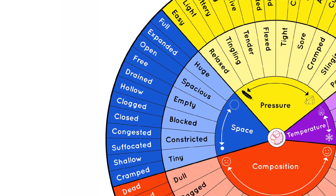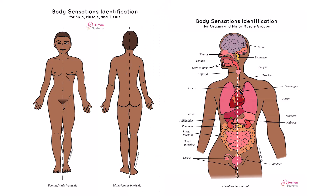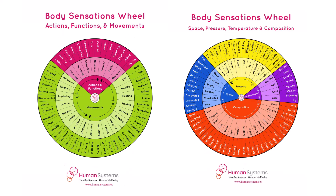The last category, space, has words we use as metaphors to describe how full or empty we feel in our bodies, such as congested and drained, as well as how big or small we feel in our environment, such as cramped and expanded. An open and closed circle shows the placement of words along the empty-full spectrum. When you use the body sensations identification system, start with the body diagrams to locate the source of the sensations in your body, then use the wheels to characterize the sensation in a particular body part or area.